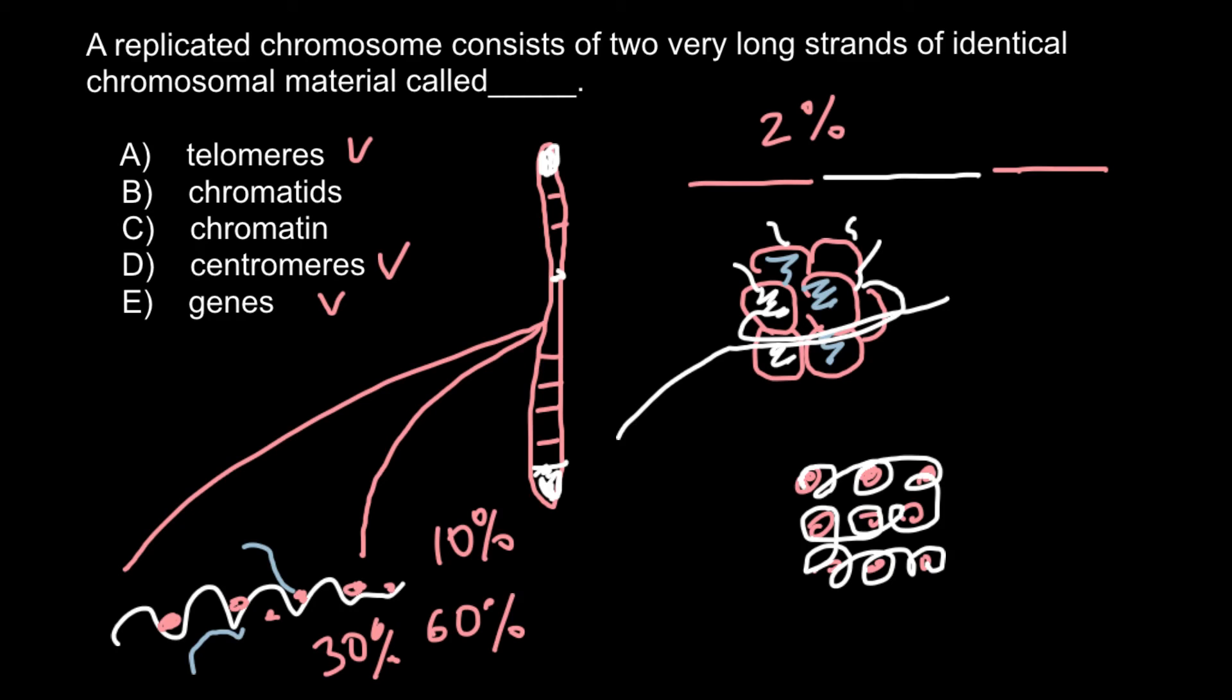We call such fragments on the chromosome where there are many genes that are active euchromatin, and those fragments that don't have active genes we call heterochromatin. Heterochromatin makes the majority of the chromosome.